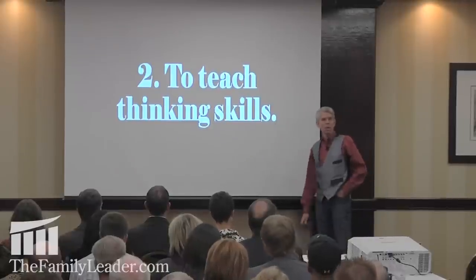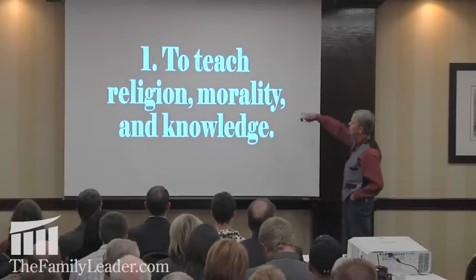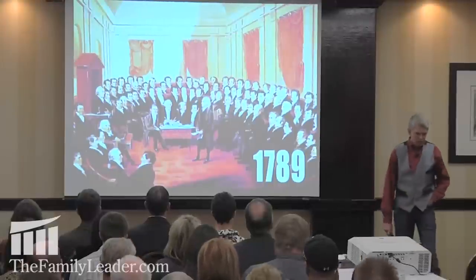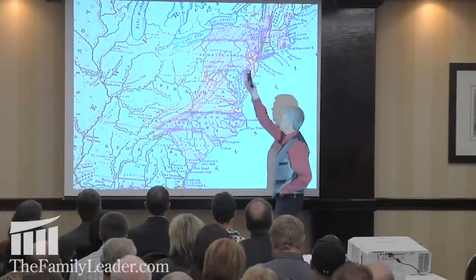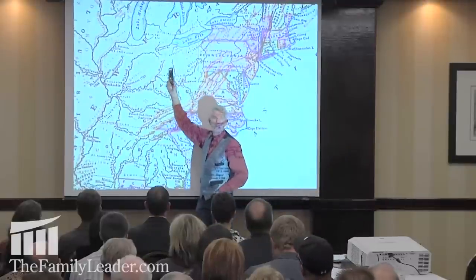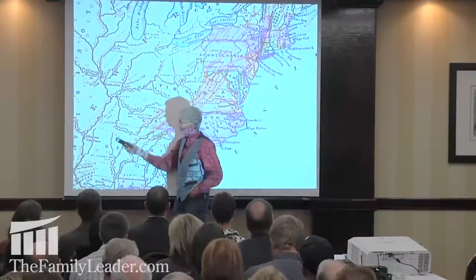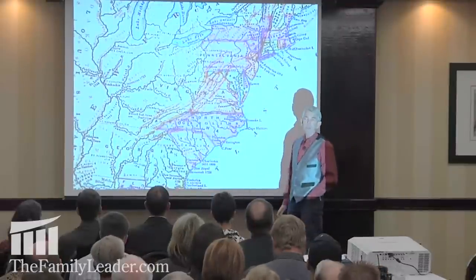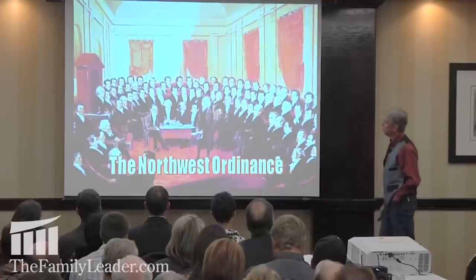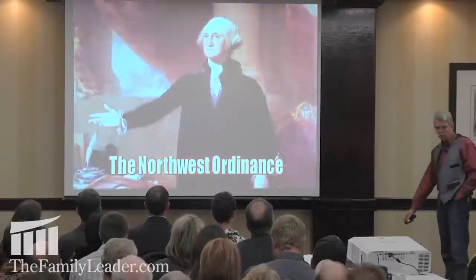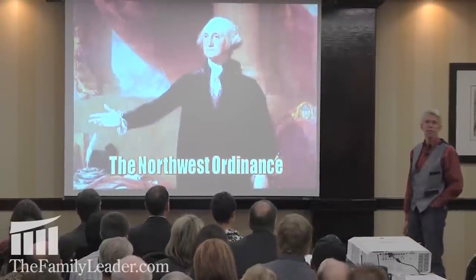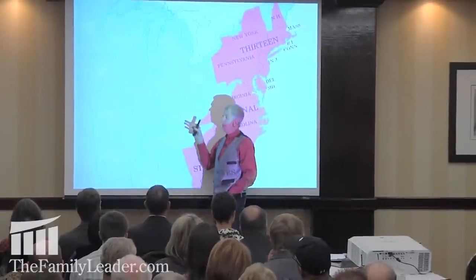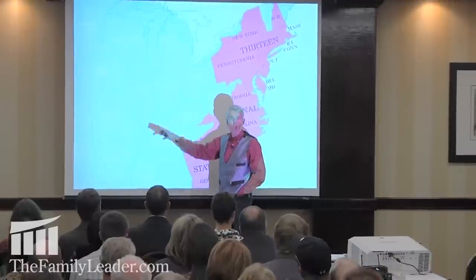In 1789, after the first federal Congress under the Constitution, they passed a law about what to do with the Northwest Territory. If you wanted to become a state, you had to go through what was called the Northwest Ordinance. The Northwest Ordinance was passed through the House and Senate, George Washington signed it into law on August 7, 1789. It's significant because Ohio, Indiana, Illinois, Iowa, Missouri, Kansas, Nebraska, Arkansas — all came in under it.